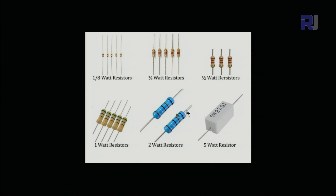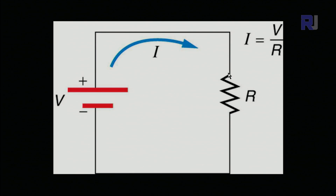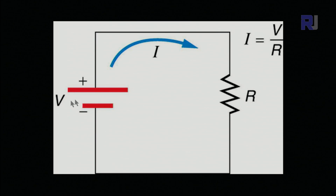Here is a simple circuit with a battery and a resistor. The current is represented by I, the voltage of the battery by V, and the resistance by R, measured in ohms. The current I equals V divided by R — Ohm's law. For example, if the voltage is 10 volts and the resistance is 2 ohms, then 10 divided by 2 equals 5 amperes of current through the resistor.